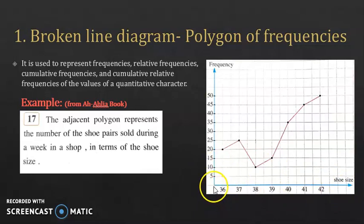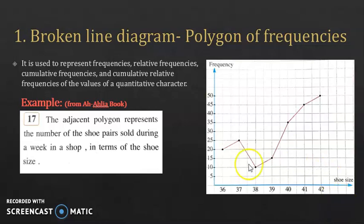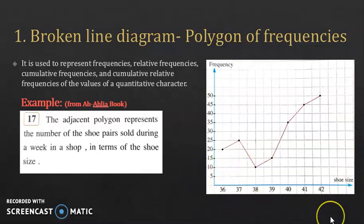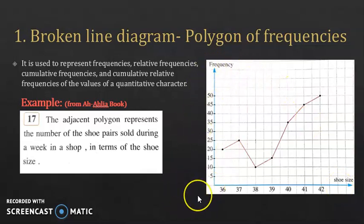Now, on the x-axis you're starting from 0 and then directly to 36, then to 37, and so on. This is acceptable only on the x-axis, and not on the y-axis. Since the shoe size starts from 36 in this shop till 42, it's okay to start from 36 on the x-axis. Also, you can ignore the scale on the x-axis — for example, if you have numbers like 36, 50, 100, 500, 1000, it's very hard to choose a convenient scale. The scale on the x-axis, which corresponds to the character, doesn't matter, while on the y-axis, which corresponds to the frequencies, it does. So you should only choose a convenient scale on the y-axis.